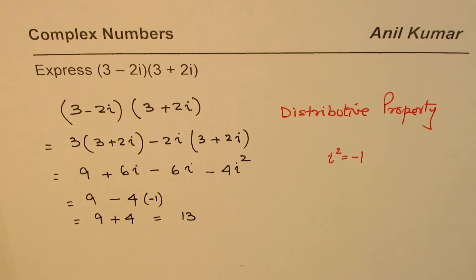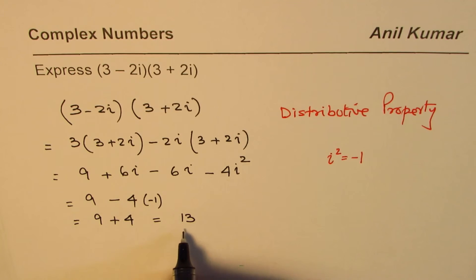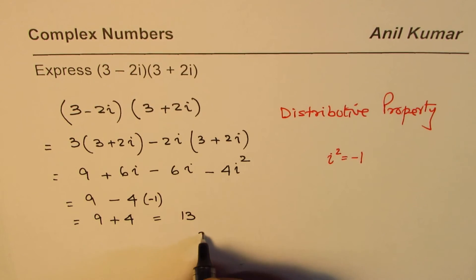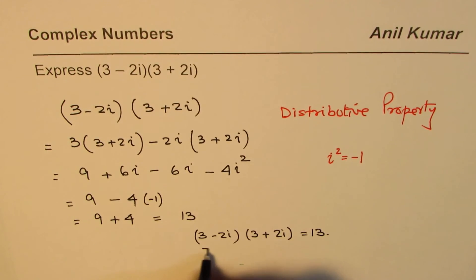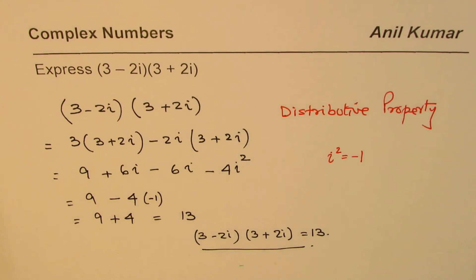So the product of these two complex numbers is actually a real number, 13. So we get 3 minus 2i times 3 plus 2i equals 13. I hope that helps. Thank you and all the best.